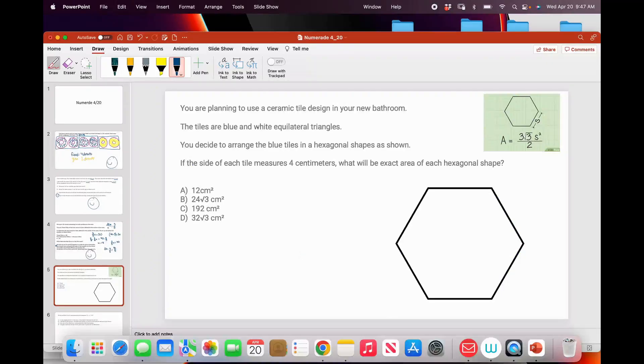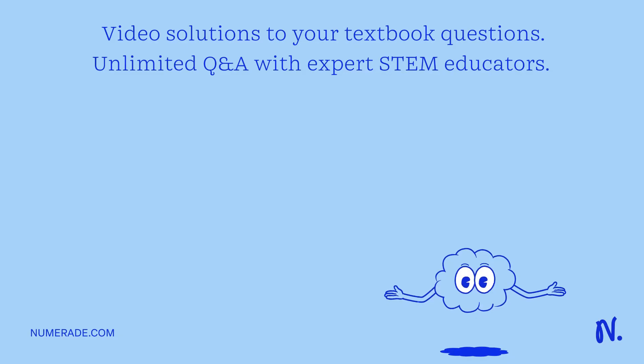For this problem, you are planning to use a ceramic tile design in your new bathroom. The tiles are blue and white equilateral triangles. You decide to arrange the blue tiles.